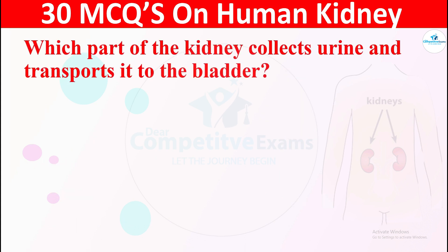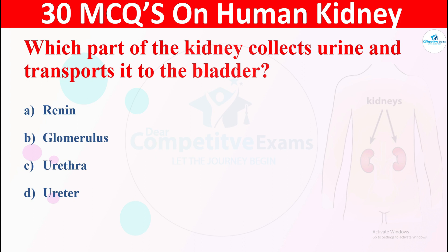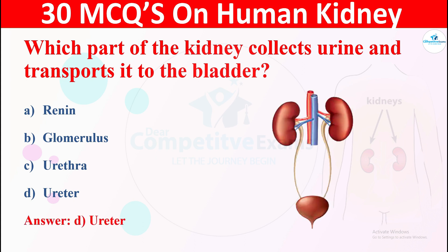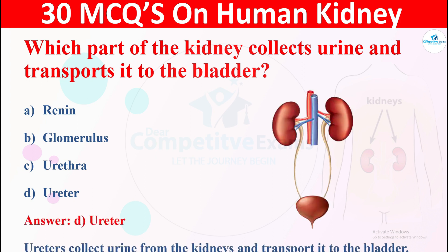Question 8: Which part of the kidney collects urine and transports it to the bladder? The options are: A) renin, B) glomerulus, C) urethra, or D) ureter. The correct answer is ureter. The ureter collects urine from the kidneys and transports it to the bladder.